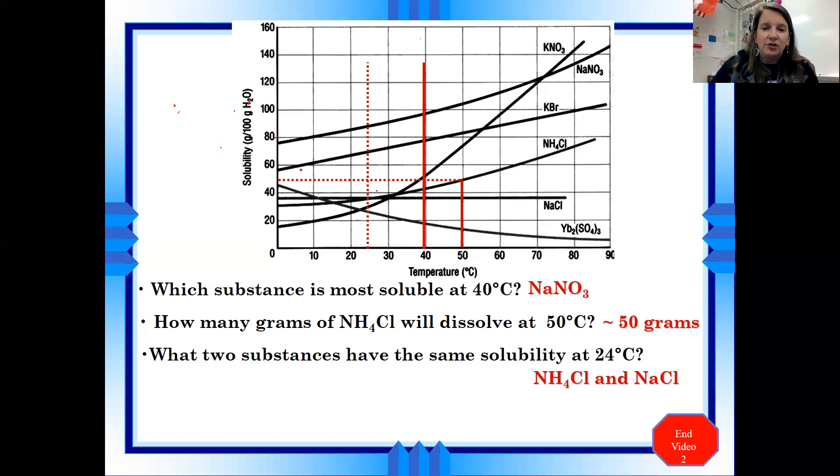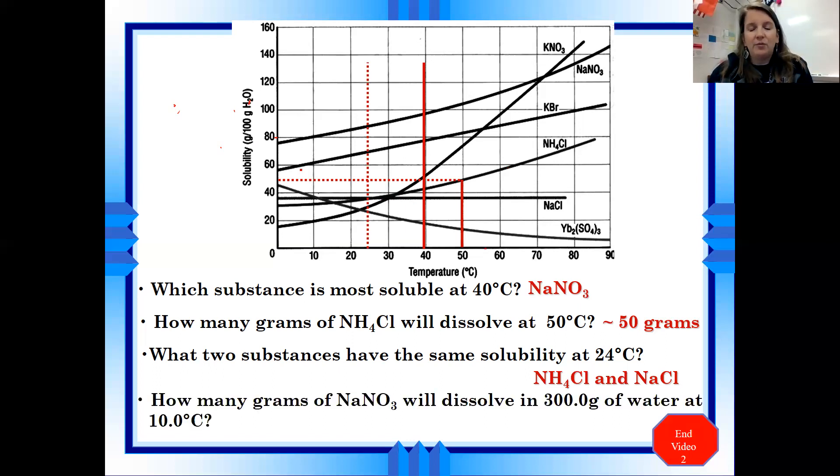I could also ask a question like this. How many grams of NaNO3 will dissolve in 300 grams of water at 10 degrees? Now, remember, I pointed out this y-axis and the label on that y-axis is the solubility per 100 grams of water. This is asking for 300 grams of water. So first, we want to go to 10 degrees and find sodium nitrate.